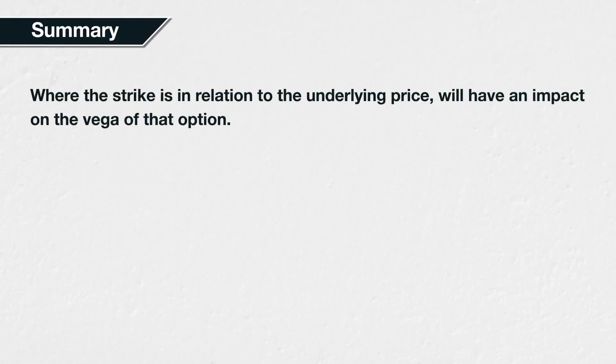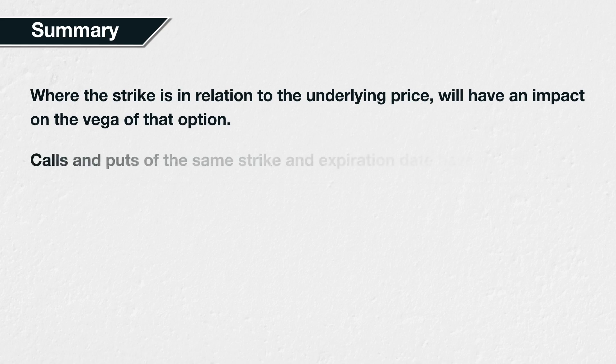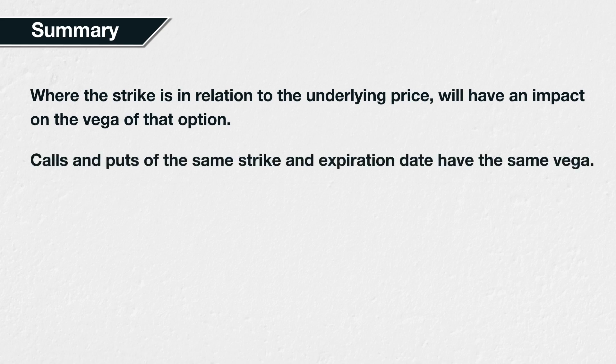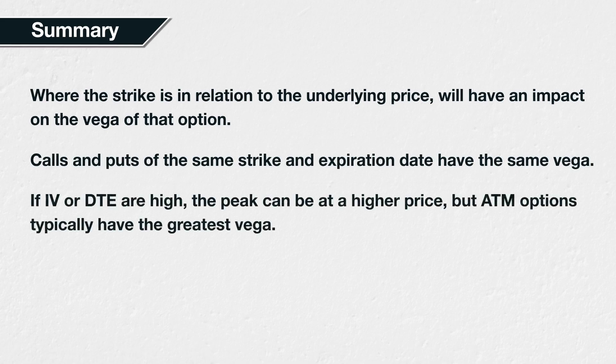In summary, where the strike price of an option is in relation to the underlying price will have an impact on the vega of that option. Calls and puts of the same strike price and expiration date share the same vega figure. Though the peak can be at a higher price if implied volatility and/or days to expiry are much higher, at-the-money options typically have the greatest vega. Vega then decreases in both directions as we move further away from the underlying price.